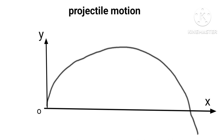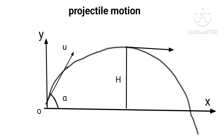Let us consider a particle is thrown in the upward direction from O with initial velocity U. It will reach a maximum height H once at A, then fall downwards and strike ground level at B. The path traveled is parabolic.